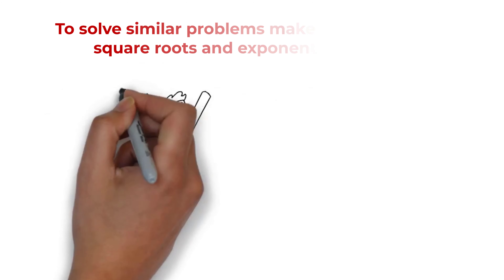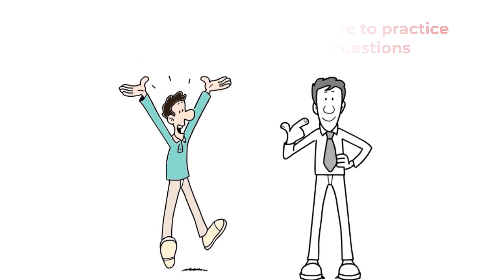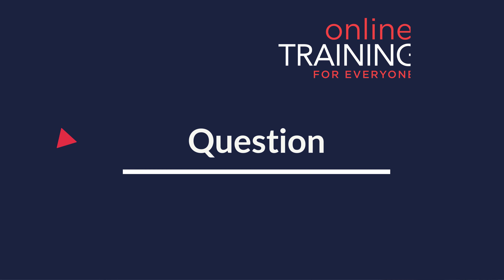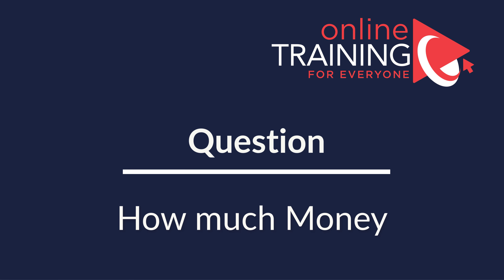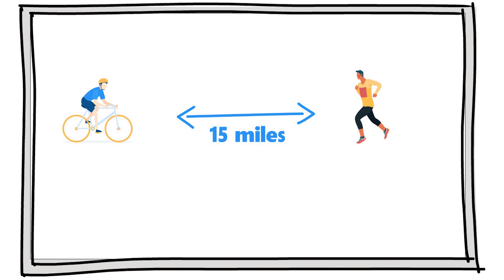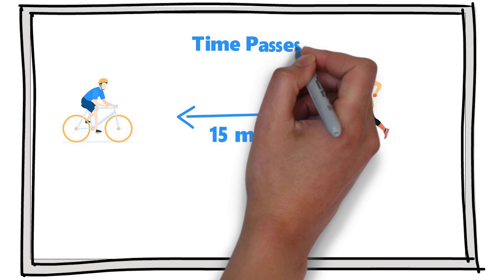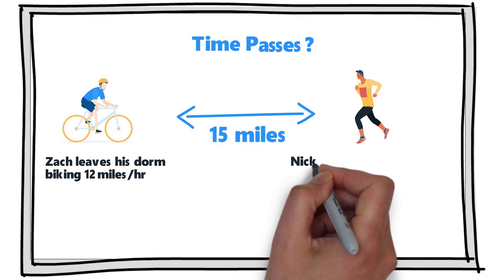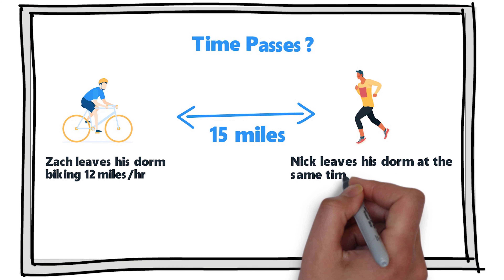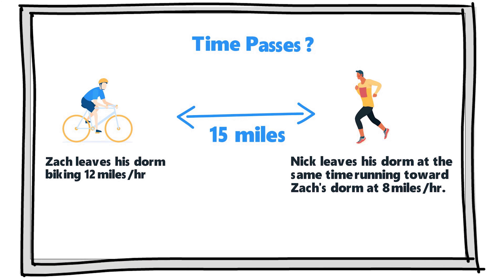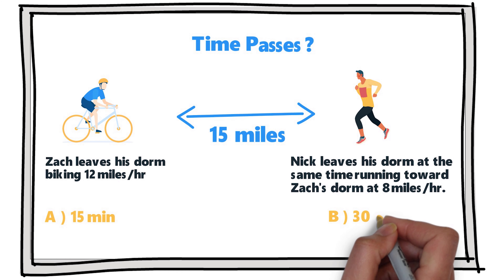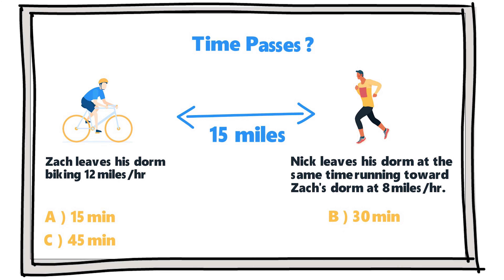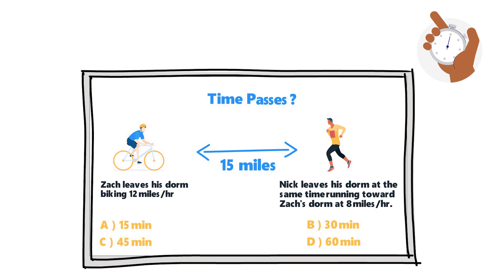Here is an interesting question which tests your knowledge of math. Zack's and Nick's dorms are 15 miles apart. How much time passes till they meet if Zack leaves his dorm biking at 12 miles per hour toward Nick's door, and Nick leaves his dorm at the same time running toward Zack's dorm at 8 miles per hour? Choices: A, 15 minutes; B, 30 minutes; C, 45 minutes; D, 60 minutes.